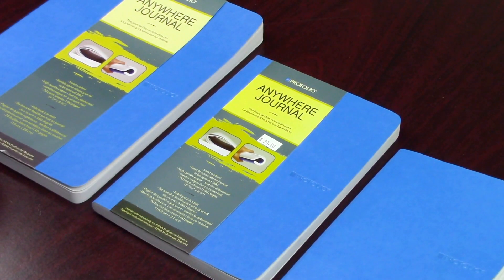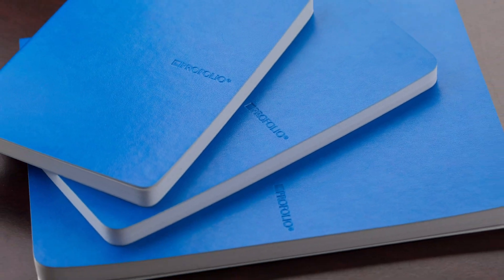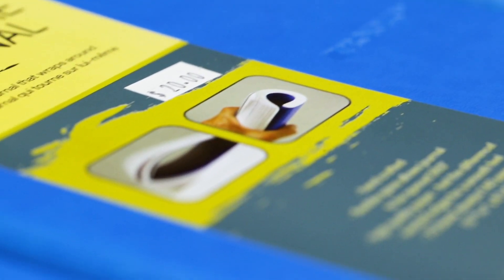Hey all, Chris here with another paper review. This week we're going to be looking at Atoya's new Portfolio Anywhere journal. This journal comes in three different sizes. The largest is seven and a half by about ten, medium size is about five and three quarters by eight and a quarter, and the smallest one is five by seven.